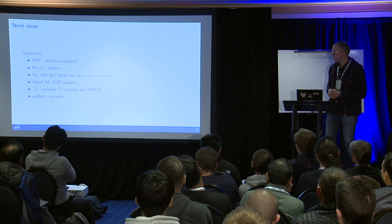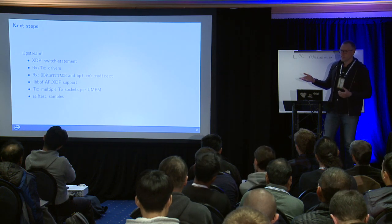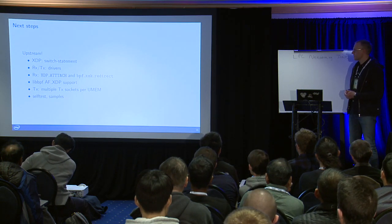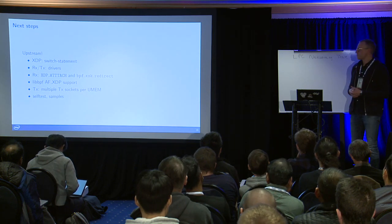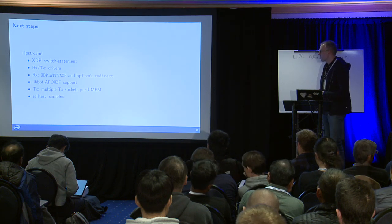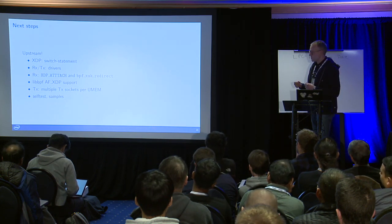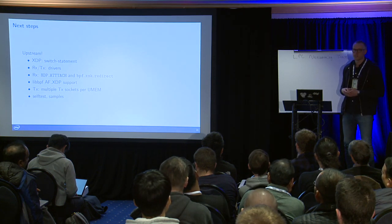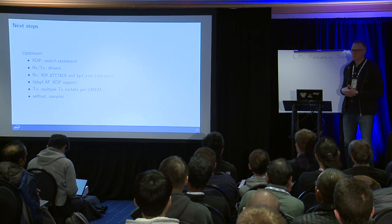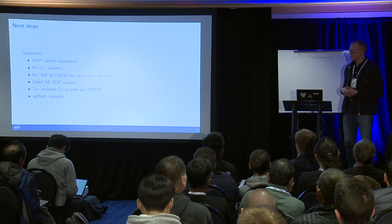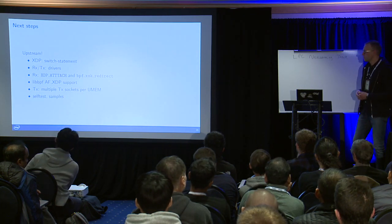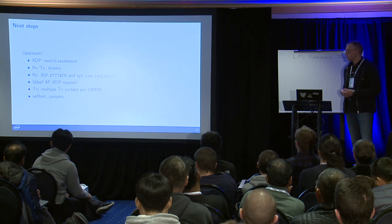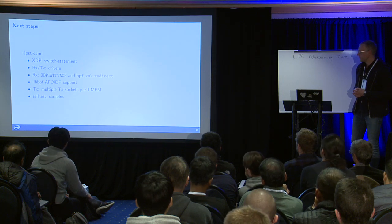What's next is trying to upstream everything. The first three things — XDP attach and the built-in BPF program — are a good idea, and I'm open for suggestions. We really need to put AF-XDP support into LibBPF, because right now AF-XDP is too hard to consume — people look at it and find it too complicated. Adding simple helpers into LibBPF would really help people get going. Also, supporting multiple transmission sockets for multiple hardware queues, and self-testing samples.